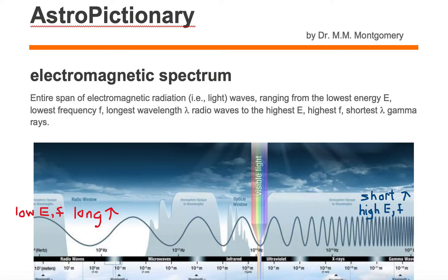Electromagnetic spectrum is the entire span of electromagnetic radiation waves, in other words, light waves, ranging from the lowest energy E, lowest frequency F, longest wavelength lambda radio waves, to the highest energy, highest frequency, shortest wavelength gamma rays.